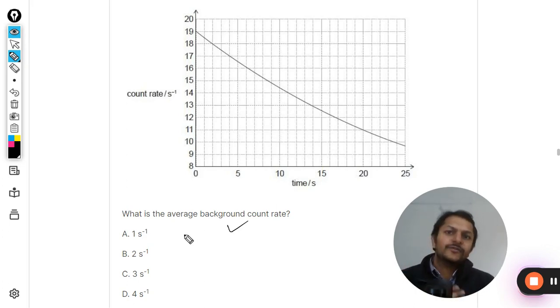So what we know as of now is that whatever is the value that is recorded by the device, the background value has to be subtracted out of it. Once we subtract it, then only the exponential graph will be there.